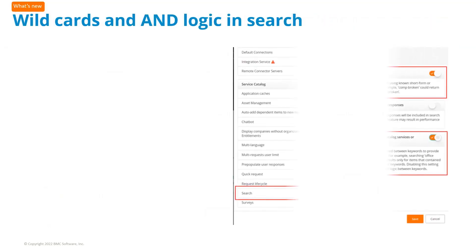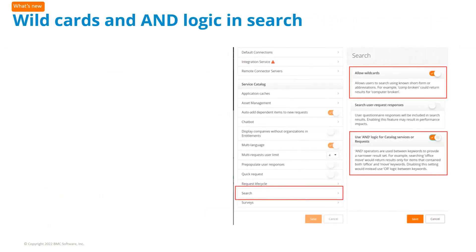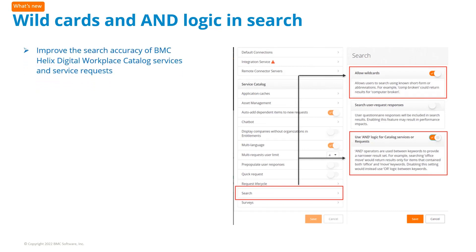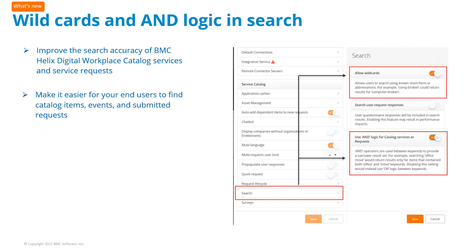As a catalog administrator, you can now enable wildcards and AND logic in search terms to improve the accuracy of search results. This makes it easier for your end users to find catalog items, events, and submitted requests.